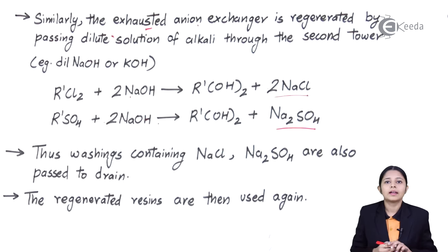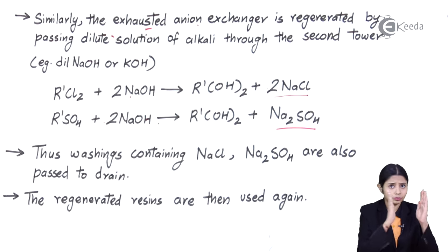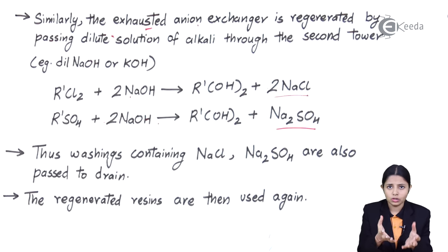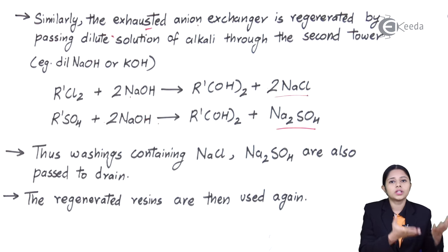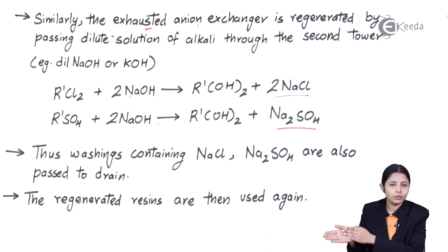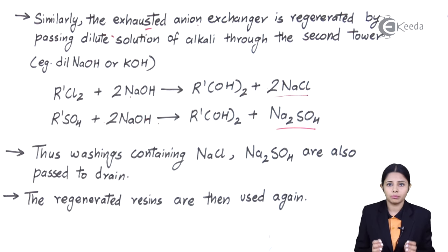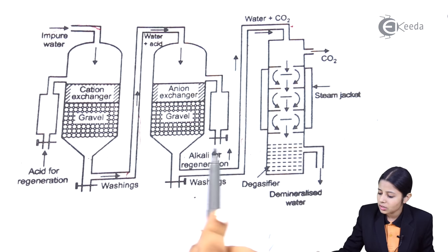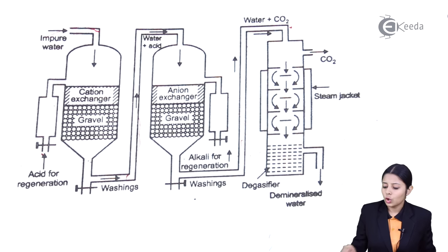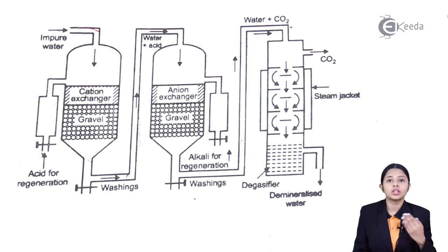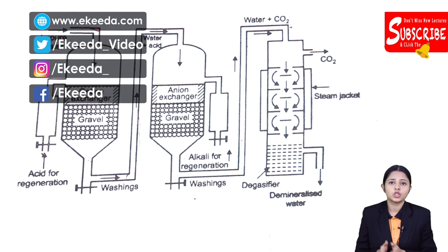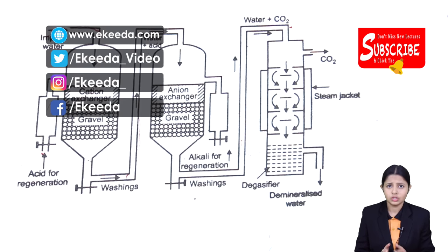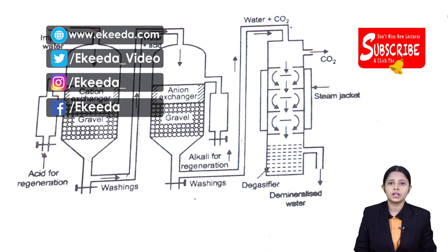So what happens is: the resins react with impure water to make it pure water. Once the resins are exhausted, the regeneration process is carried out to make new resins, which again help in softening the next batch of water. This is the ion exchange process that keeps on happening. In this video, we learnt about the ion exchange process carried out with cation exchangers and anion exchangers, and also the regeneration of resins that help in the purification of water. Thank you so much for watching. Stay tuned to and subscribe to Ikida.